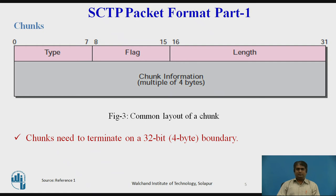Note that the length of padding, if any, is not included in the length field calculation. This helps the receiver determine how many useful bytes a chunk carries. If the value is not a multiple of 4, the receiver knows there is padding. For example, when the receiver sees a length of 17, it knows the next multiple of 4 is 20, so there are 3 bytes of padding to discard. If the receiver sees a length of 16, there is no padding.